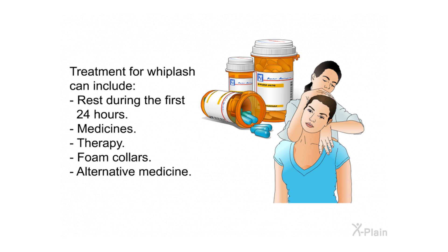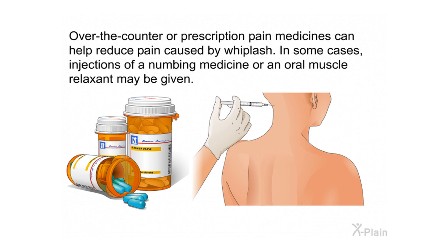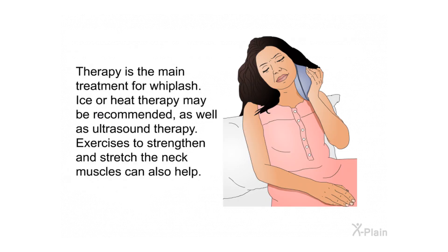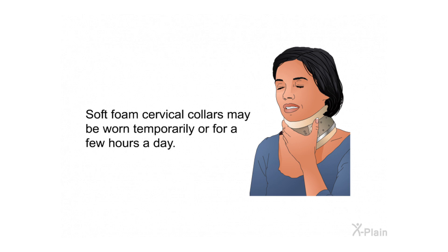Treatment for whiplash can include rest during the first 24 hours, medicines, therapy, foam collars, and alternative medicine. Over-the-counter or prescription pain medicines can help reduce pain; in some cases, injections of a numbing medicine or an oral muscle relaxant may be given. Therapy is the main treatment — ice or heat therapy, ultrasound therapy, and exercises to strengthen and stretch neck muscles are recommended. Soft foam cervical collars may be worn temporarily or for a few hours a day.